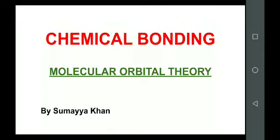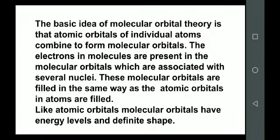According to this theory, we assume that the atomic orbitals participating in bond formation overlap and form molecular orbitals. The basic idea is that the atomic orbitals of individual atoms combine to form molecular orbitals, and after their formation, electrons get filled or distributed between the atoms forming the molecule.